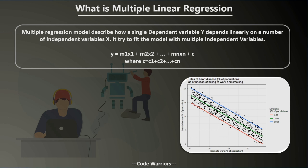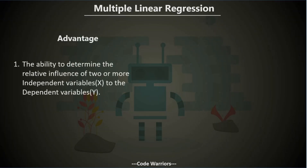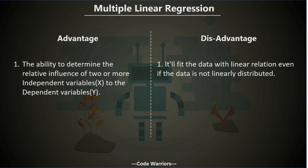Now we are going to learn about the advantages and disadvantages of multiple linear regression. Since we haven't learned many different machine learning algorithms yet, we'll compare it with simple linear regression. The advantage of multiple linear regression is that it has the ability to fit the model on multiple independent variables towards a single dependent variable — where independent variables are x and dependent variable is y. The disadvantage is that multiple linear regression is not suitable for nonlinear data.